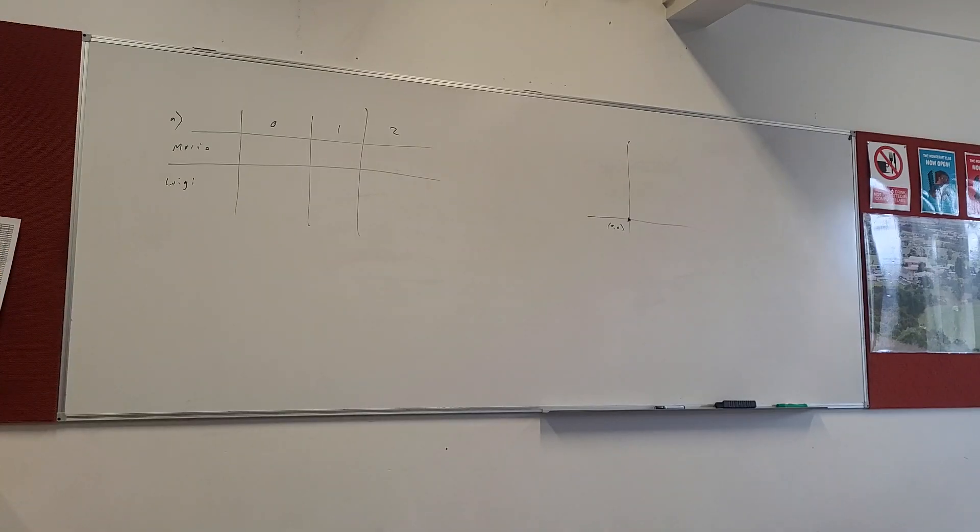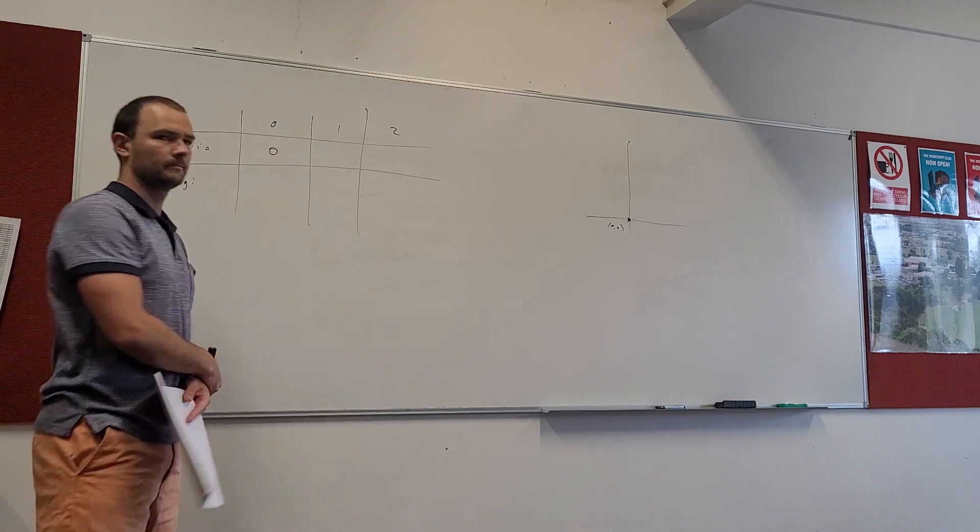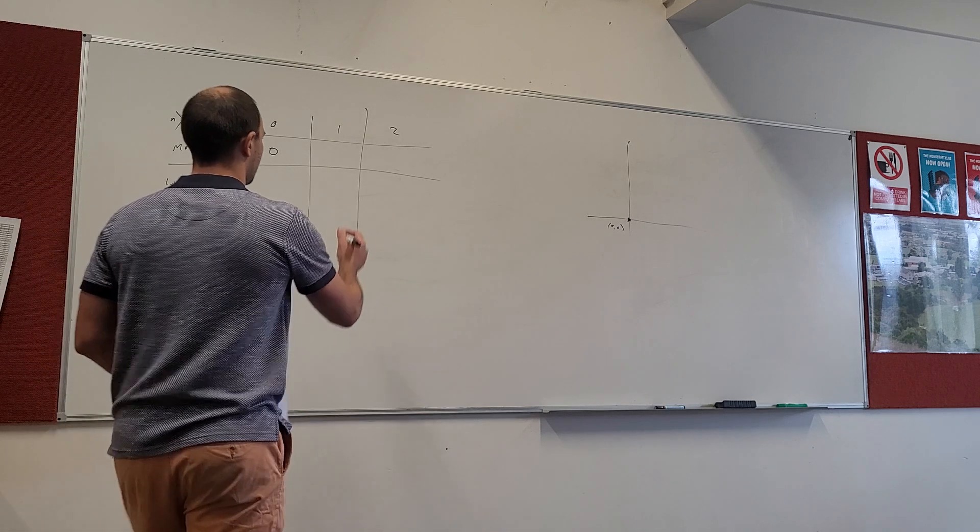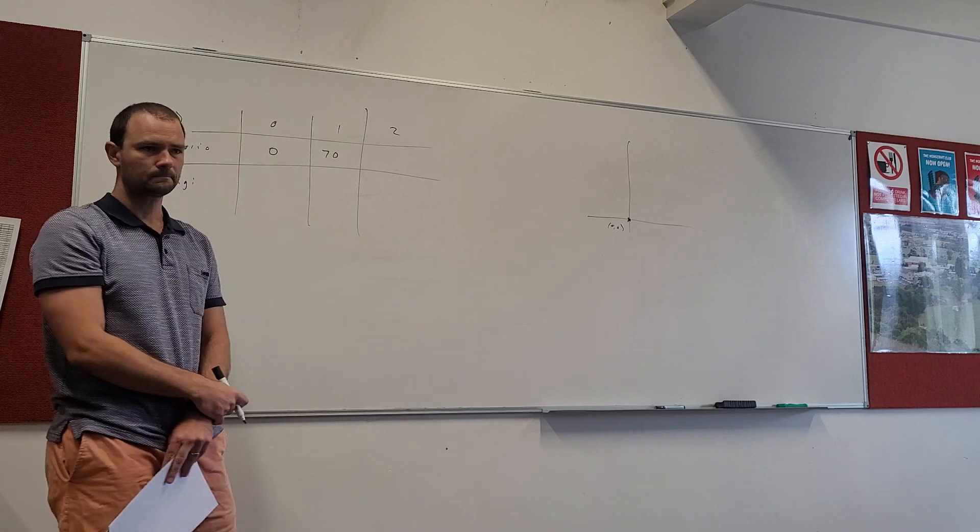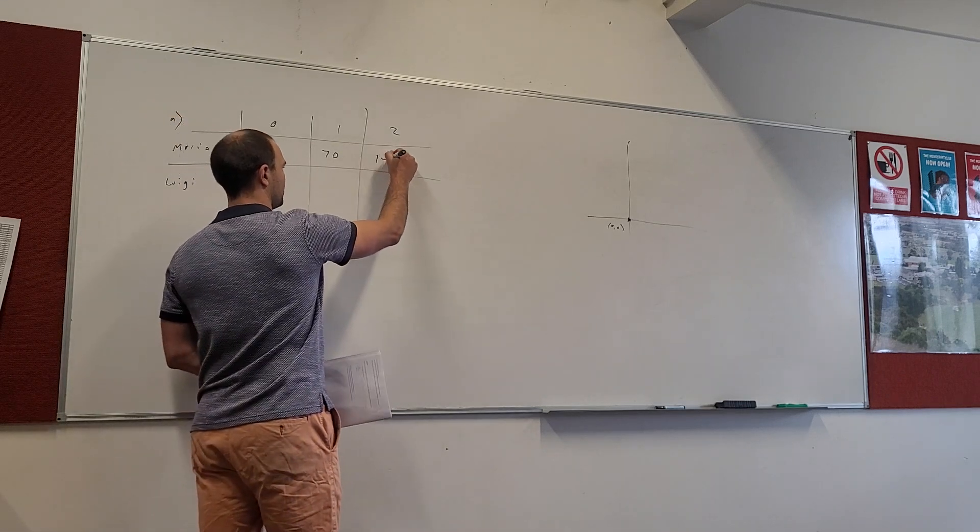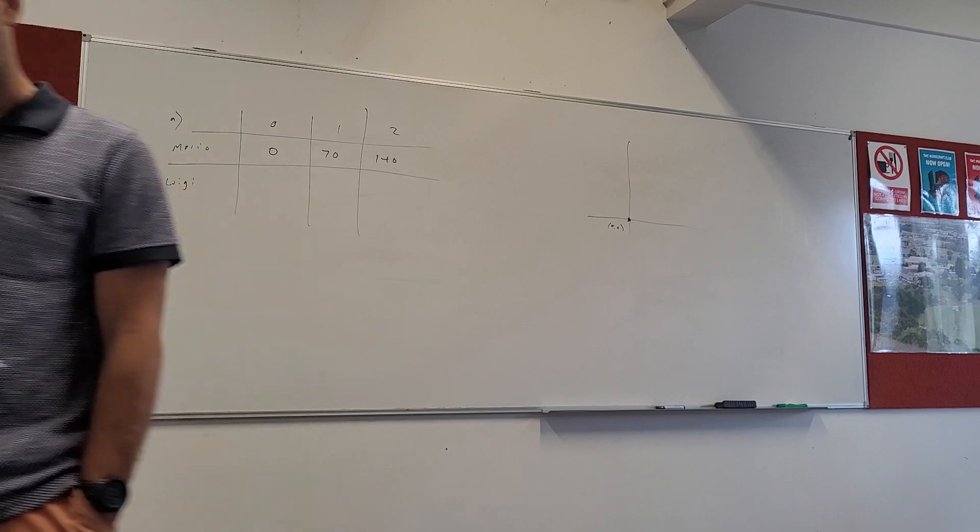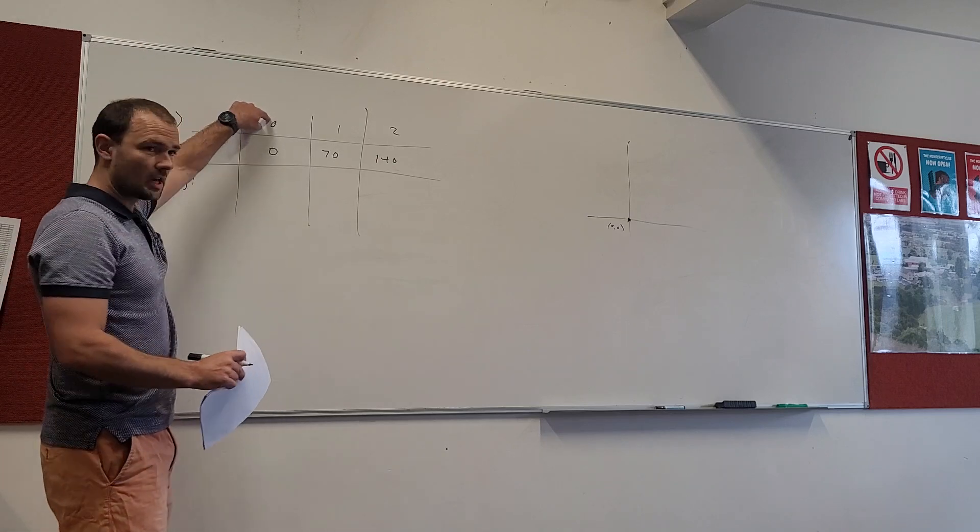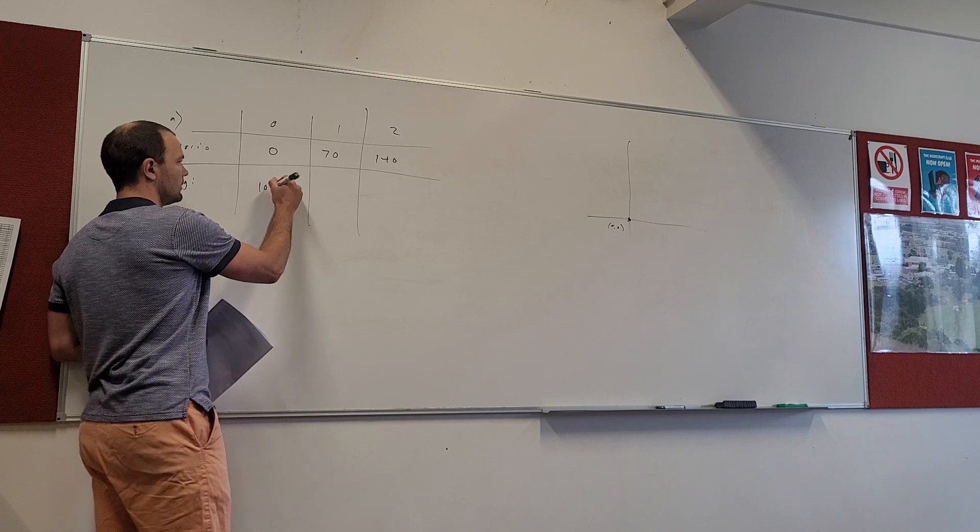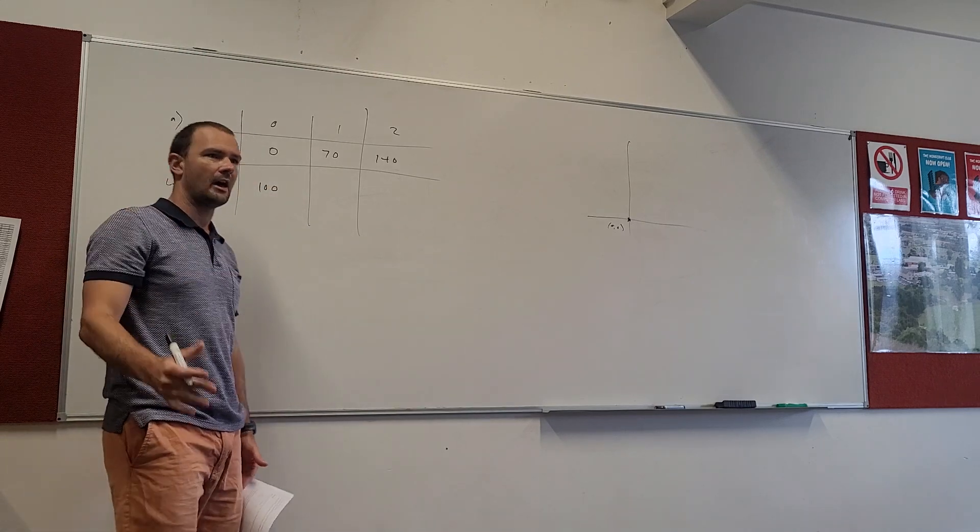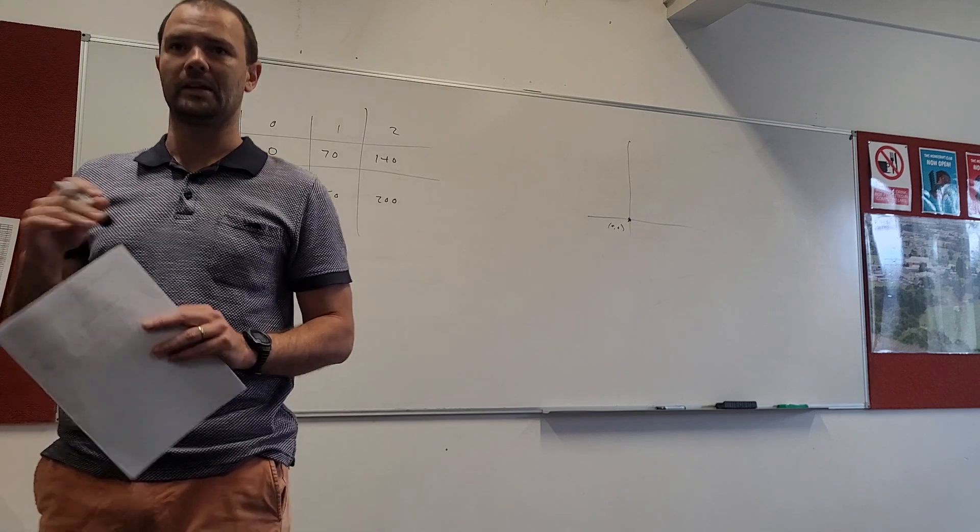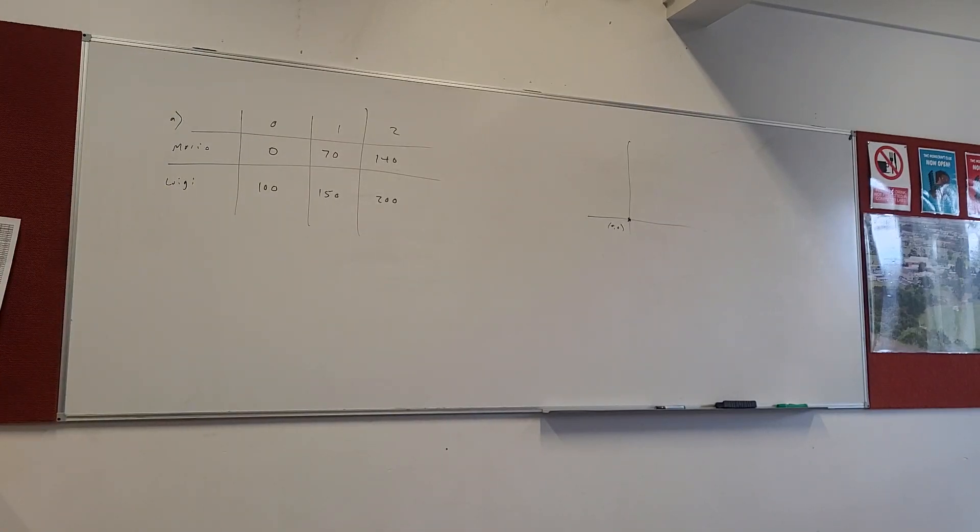So, for 0 hours, if Mario costs $70 per hour flat rate, 0 hours, Mario is going to be $0 here. For 1 hour, Mario would be $70. And for 2 hours, Mario would be $140. Luigi, on the other hand, for 0 hours, for him to just rock up at your doorstep costs $100. But then he charges $50 per hour, right? So, for 1 hour, he would be $150. For 2 hours, he would be $200. And we can keep on going. Fill in the following table. Complete. Table is complete.